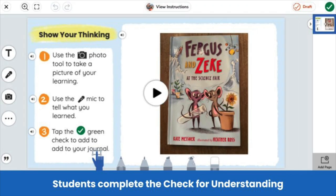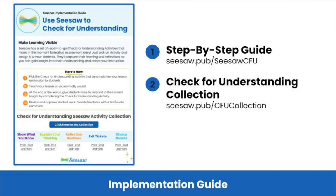Fergus and Zeke take place in a classroom. Fergus and Zeke are mice, and they are the class pets. They want to be in the class science fair.